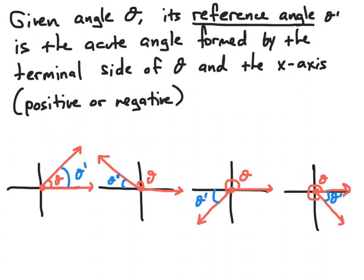Given any angle theta, we're going to define its reference angle, denoted theta prime, to be the acute angle formed by the terminal side of theta and either the positive or negative x-axis. Notice that only one half of the x-axis will form an acute angle with the terminal side, and so that is the part of the x-axis we'll need. At the bottom of the screen, we have four different angles theta, all drawn in red. The first angle is in quadrant one, the second in quadrant two, the third in quadrant three, and the fourth in quadrant four. For each of these angles theta, we've sketched the reference angle theta prime in blue. Notice that in quadrants one and four, the reference angle is made with the positive x-axis, while in quadrants two and three, the reference angle is formed with the negative x-axis, again to form an acute angle.